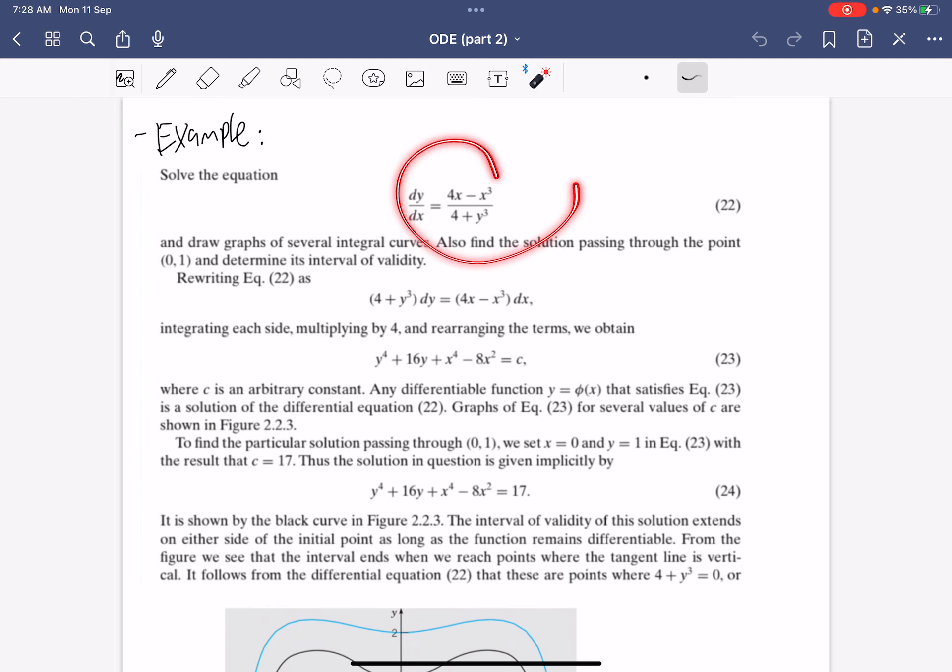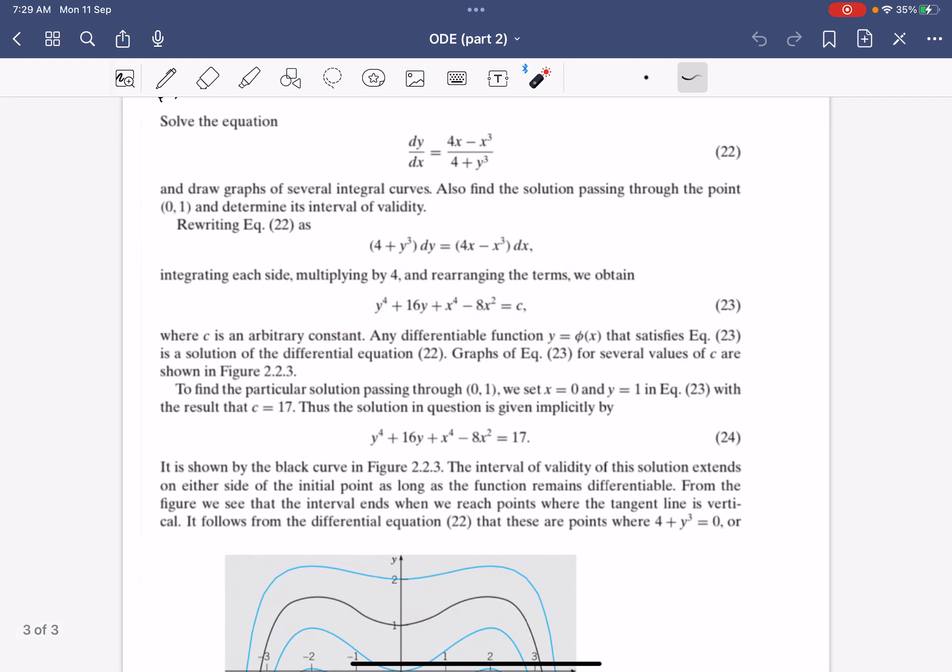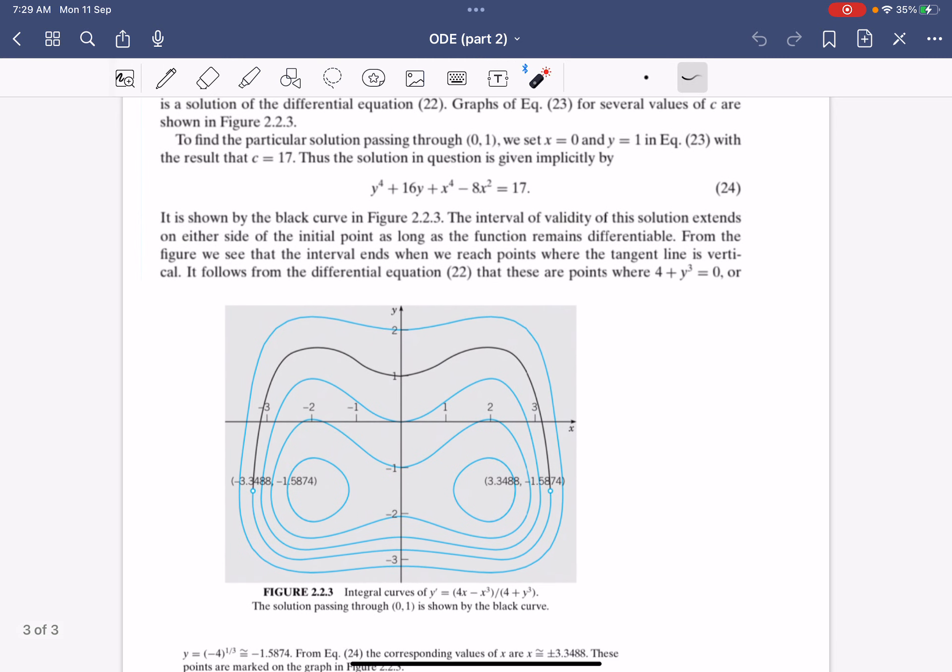Same for this example—you just need to multiply over and integrate normally. You should get this function, which is the implicit solution to the differential equation. For example, let's say our IVP is a solution passing through (0, 1).